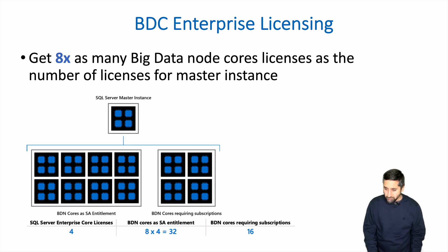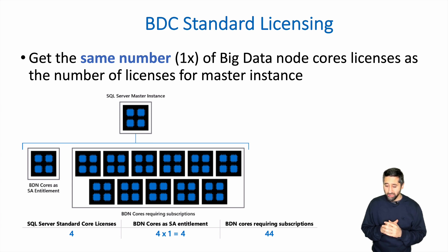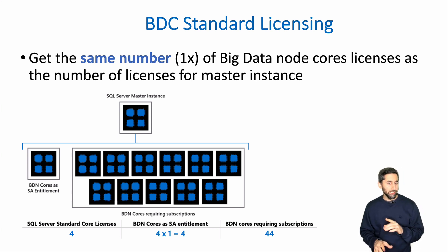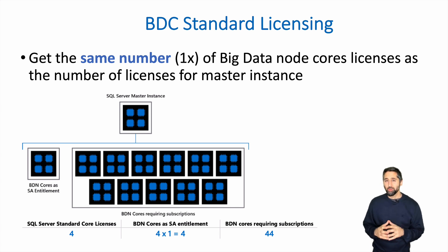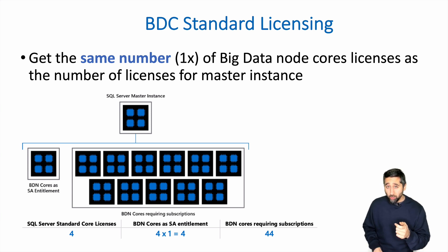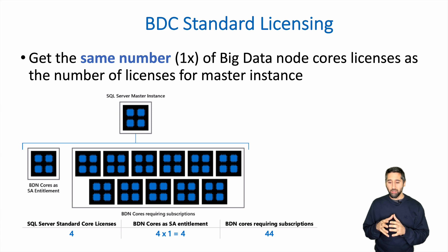For Standard Edition, you get the same number of big data node core licenses as you have on the master instance. In this case we have four on the master instance, so it's four times one — not eight, but one. So you have four plus four, that's eight entitlement cores, and then you just have to purchase the other 44 core licenses for the big data nodes. The biggest difference between Enterprise and Standard is that multiplier: eight times versus one.